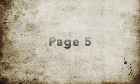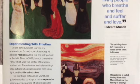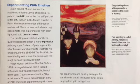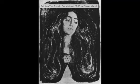Now look on page 5. In art school, he learned the academic, or formal style of painting, called realistic. But then he traveled to Paris, which was the center of European modern art. There he saw works by cutting-edge artists who experimented with color, light, and bold brushstrokes. The paintings astonished Munch.